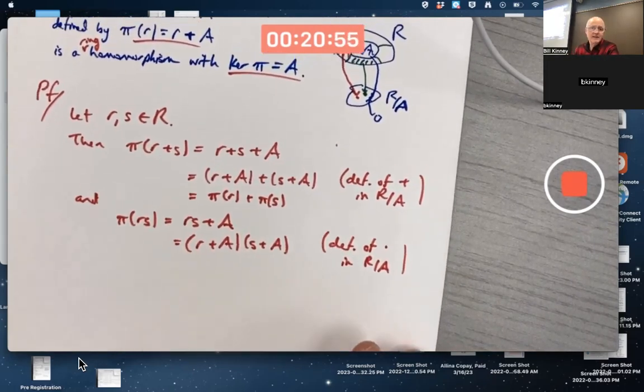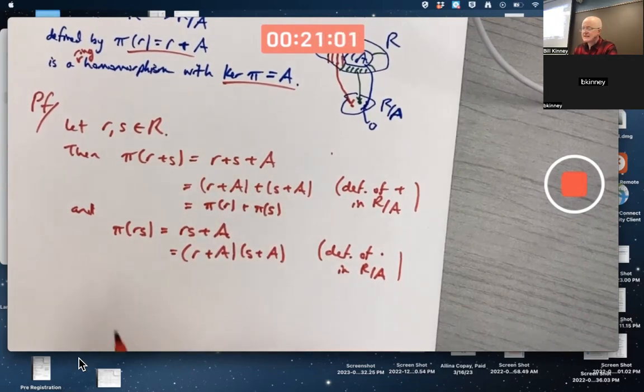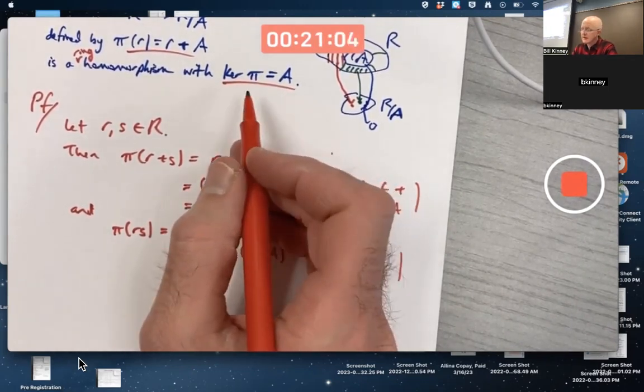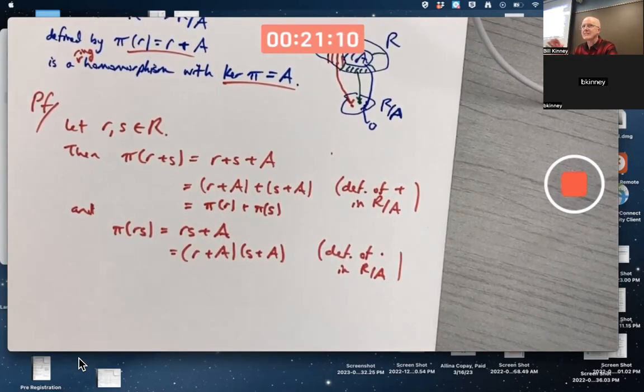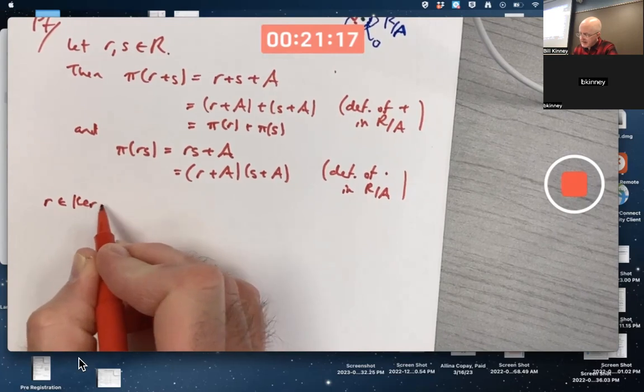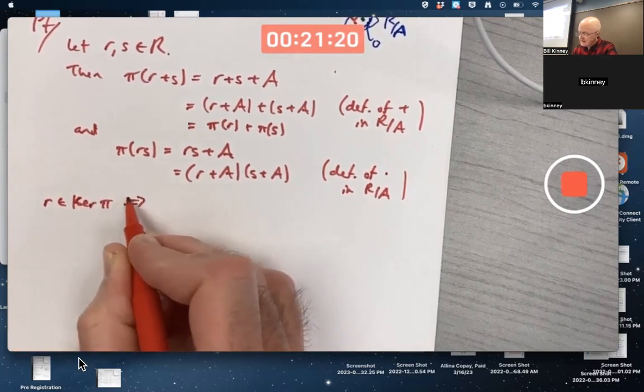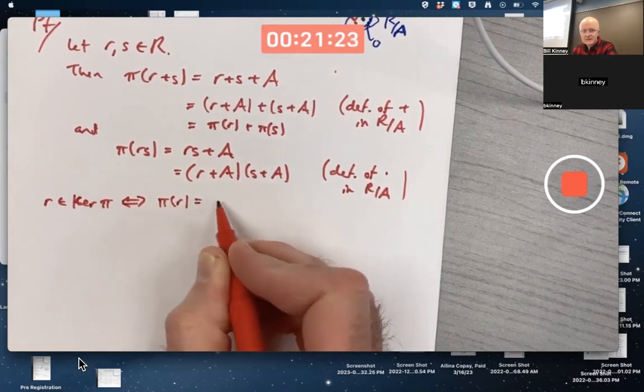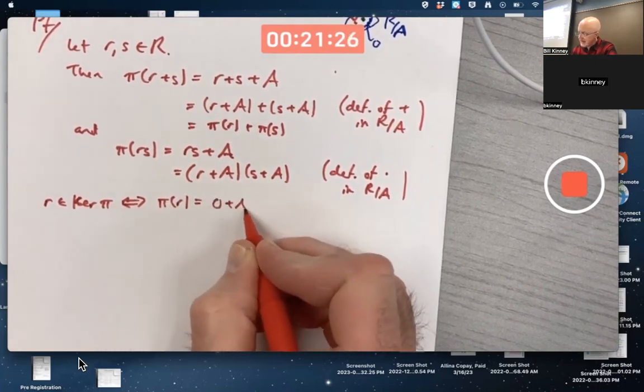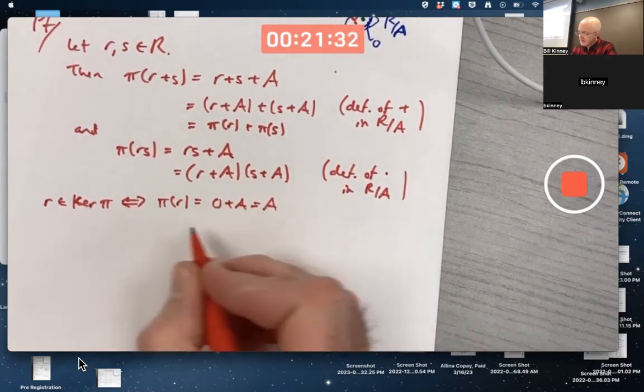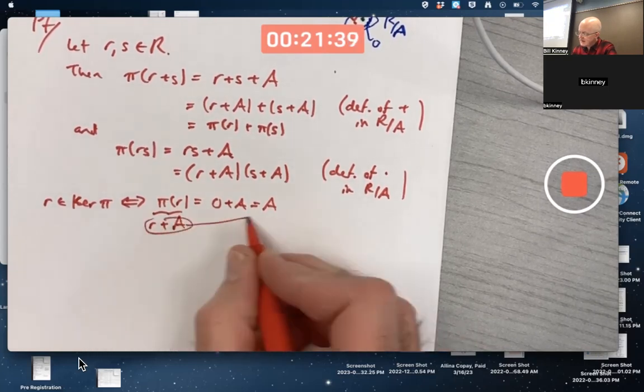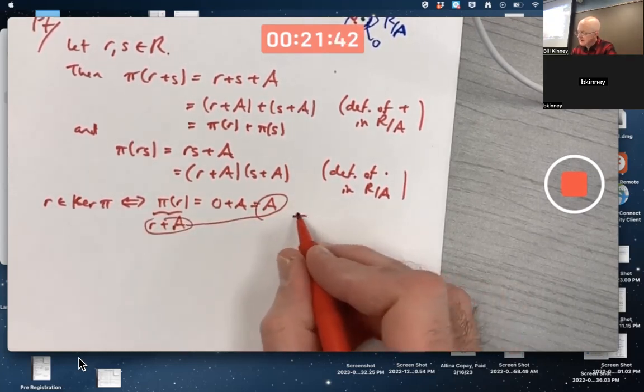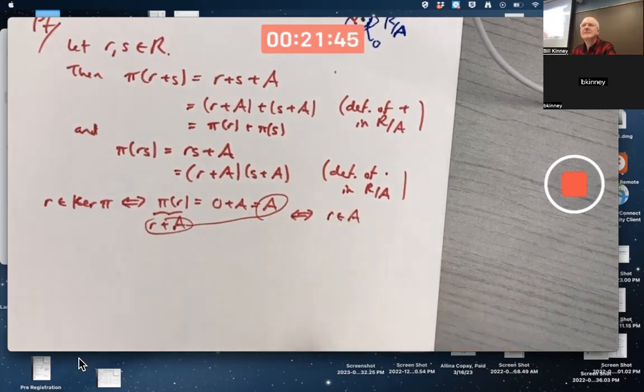All that's left is to verify that the kernel of pi equals A. Technically, we need to show two inclusions here. If an element's in the kernel, then it's also an A and vice versa. We could effectively do that at once here by writing double implications. R being in the kernel of pi is equivalent to saying pi of R equals zero plus A. It's the zero element. But pi of R equals R plus A. And this equality by properties of cosets is equivalent to saying R is an A. Done.